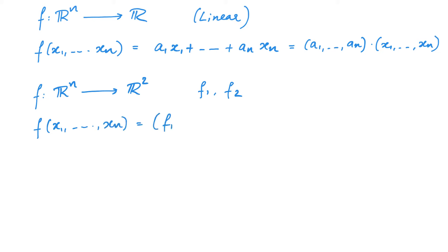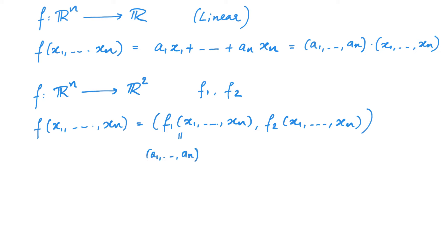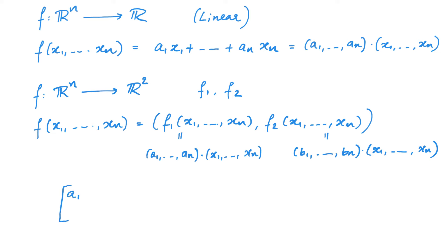Then f(x₁, ..., xₙ) can be written as (f₁(x₁,...,xₙ), f₂(x₁,...,xₙ)). The earlier result tells us that f₁(x₁,...,xₙ) can be expressed as (a₁, a₂, ..., aₙ) dot (x₁, ..., xₙ). Similarly, f₂(x₁,...,xₙ) can be expressed as (b₁, b₂, ..., bₙ) dot (x₁, ..., xₙ). What we are saying is that there exist such vectors (a₁,...,aₙ) and (b₁,...,bₙ). As soon as we have these two vectors, we can obtain a matrix representation of this linear map, with rows (a₁,...,aₙ) and (b₁,...,bₙ).